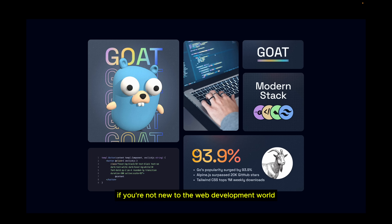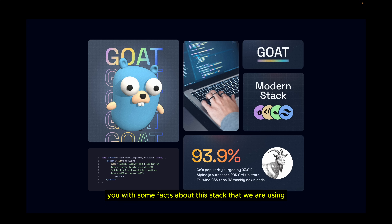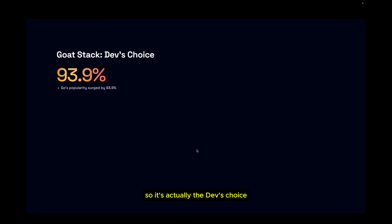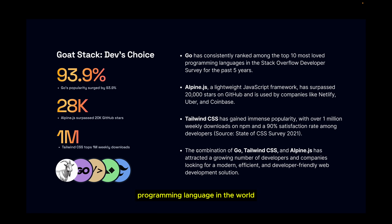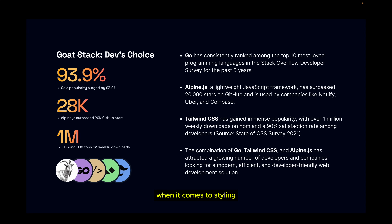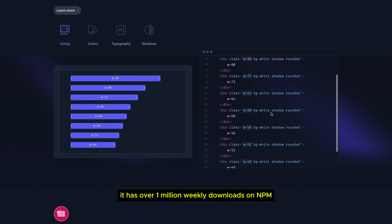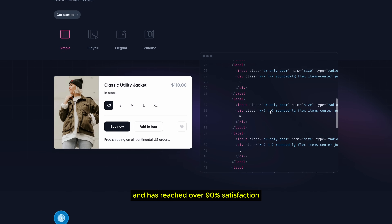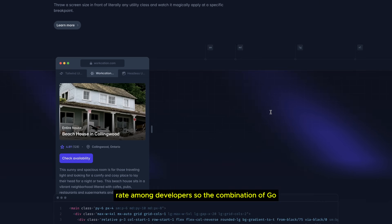If you're not new to web development, you've probably heard of Tailwind CSS, Alpine.js, and Go Temple. Let me hit you with some facts about this stack. Go is one of the most loved programming languages in the world. Alpine.js is a lightweight JavaScript framework that has surpassed 20k stars and is used by companies like Netlify, Uber, and Coinbase. Tailwind CSS has over 1 million weekly downloads on NPM and has reached over 90% satisfaction rate among developers.